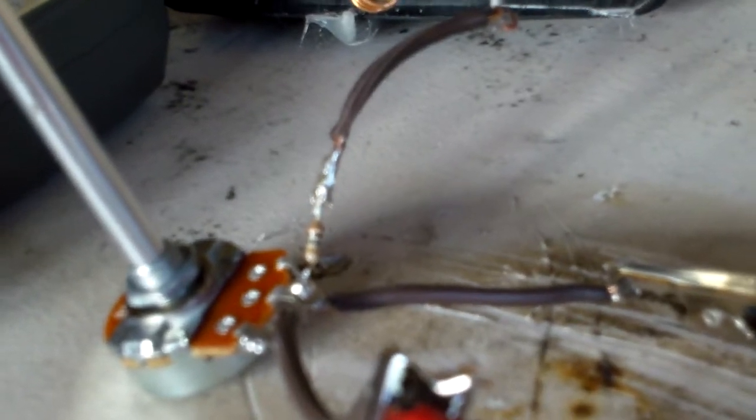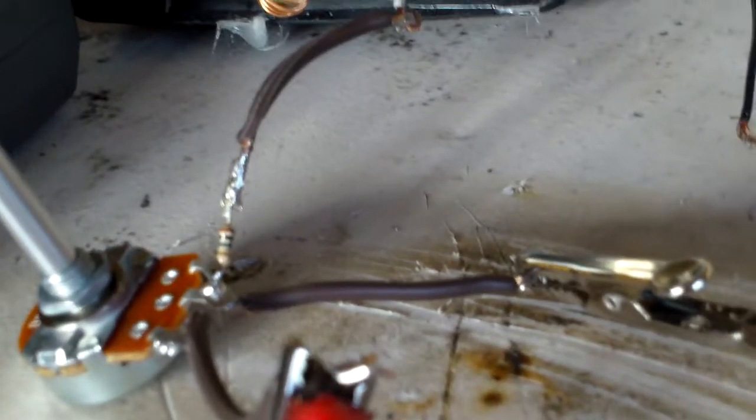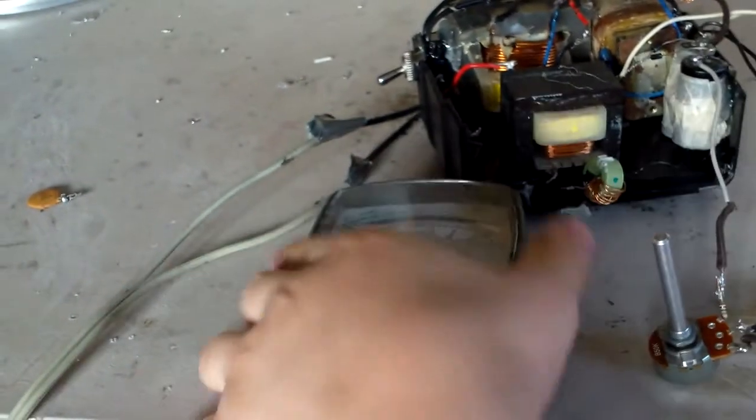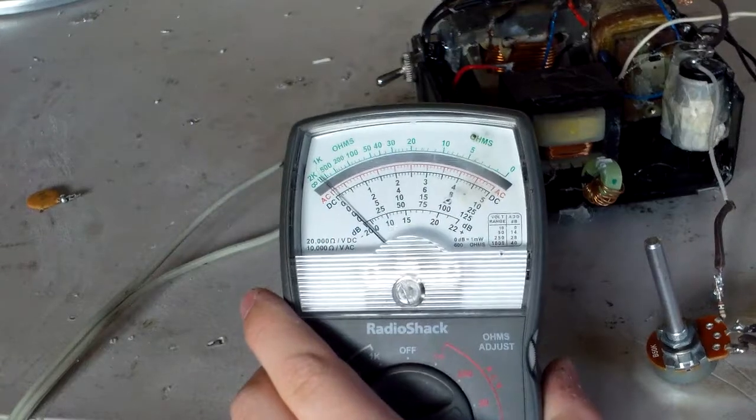And between the center terminal and ground will be biasing for the tube, and right here I have the meter on a 25 volt scale.